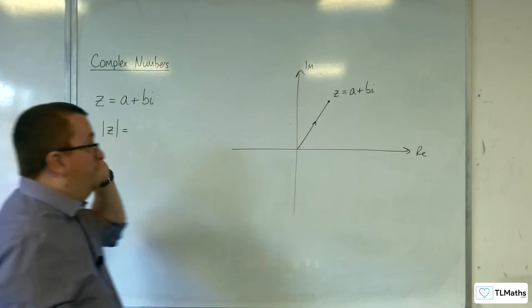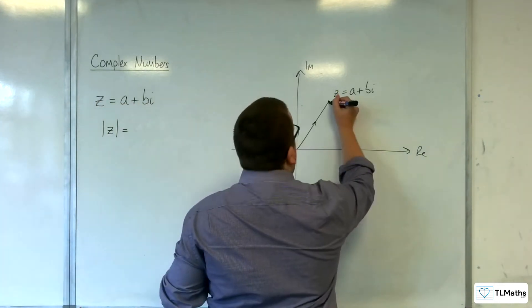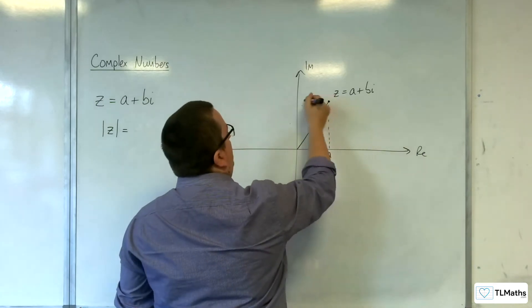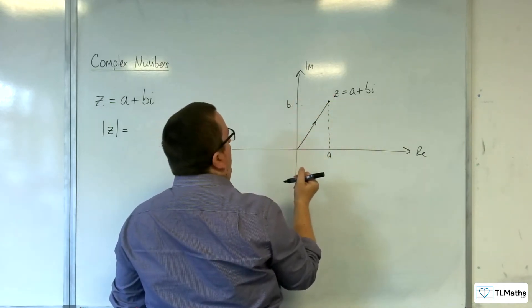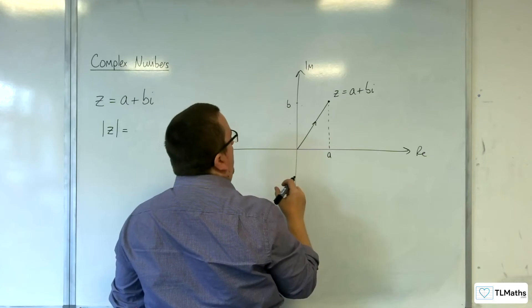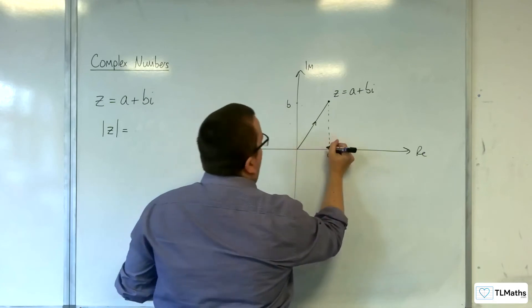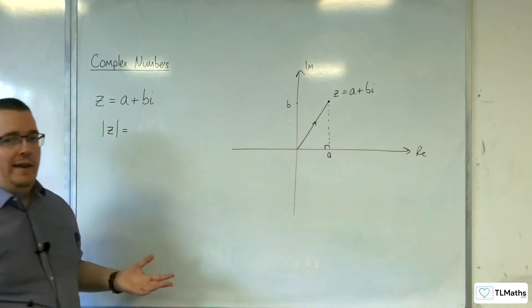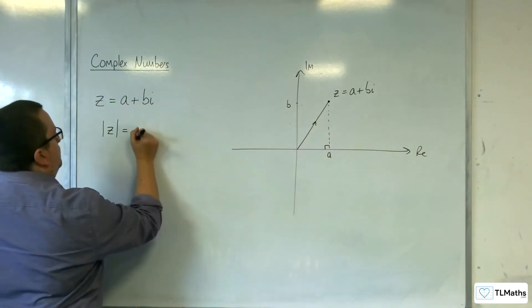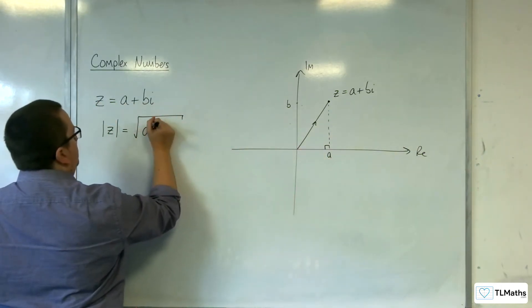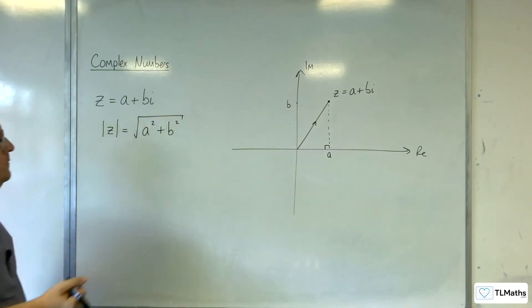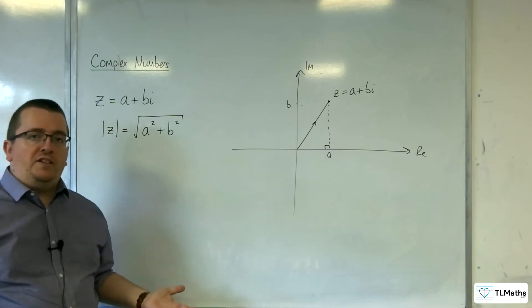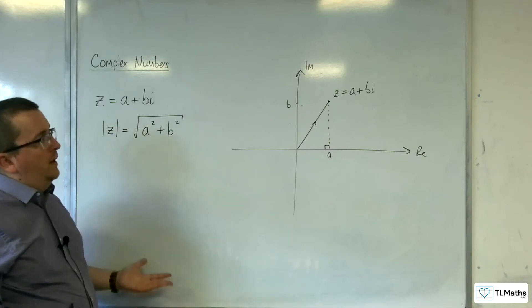The length of this would be: if I am A along on the real axis and B up on the imaginary axis, then the length of that will be the square root of A squared plus B squared, the length of the vector. That is the modulus of my complex number, its length.